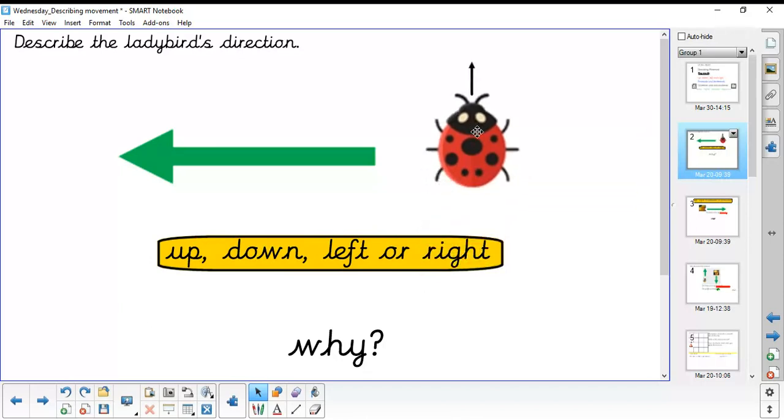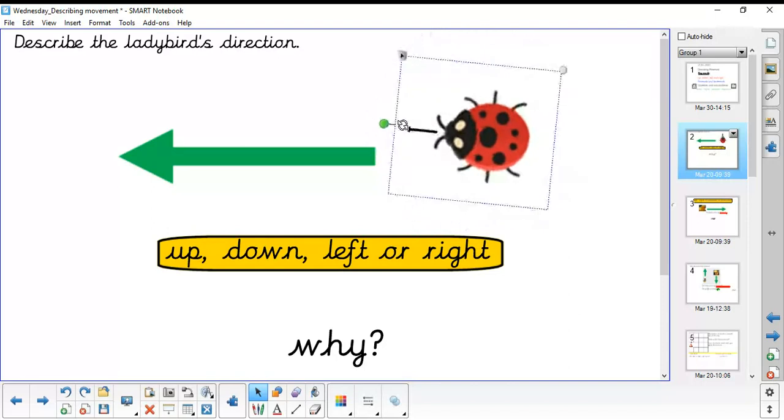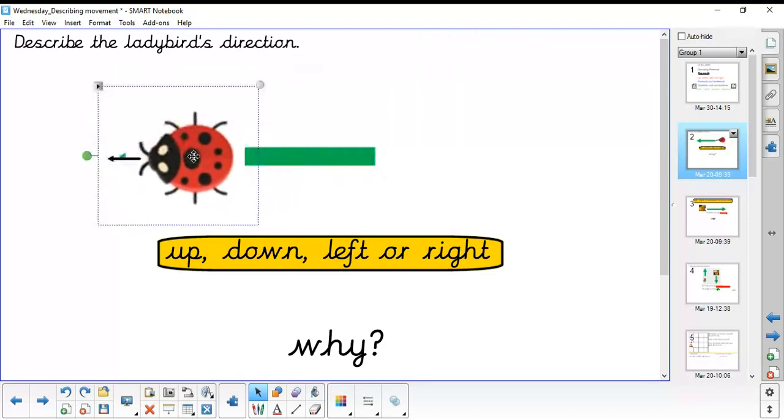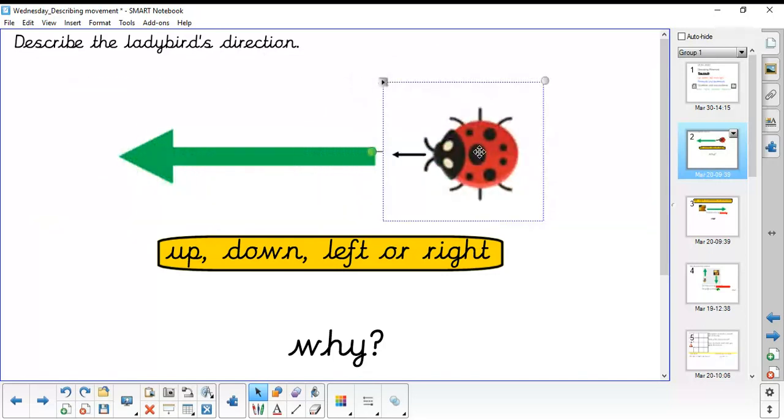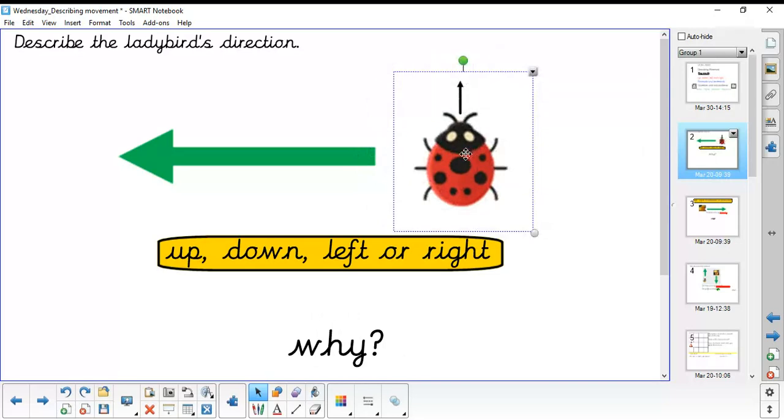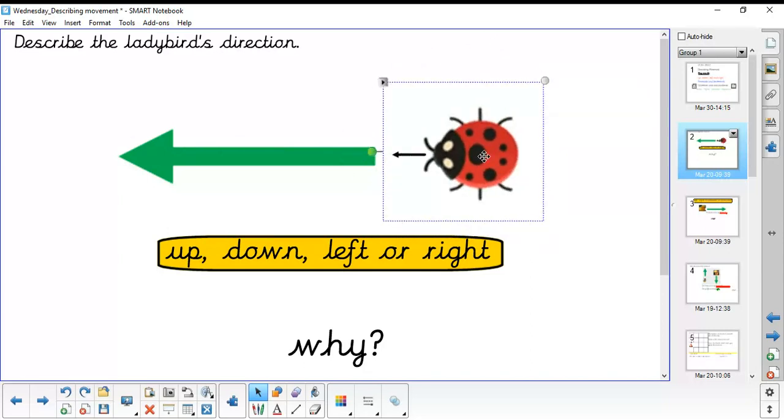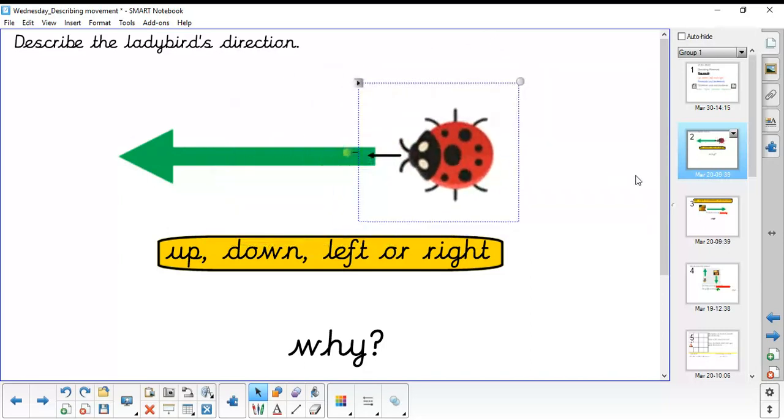If we said for the ladybird to move left, it would scuttle round and then move along the green line. So we can see that actually it wasn't looking to the left straight away. It had to be told to turn left and then move along the green line.